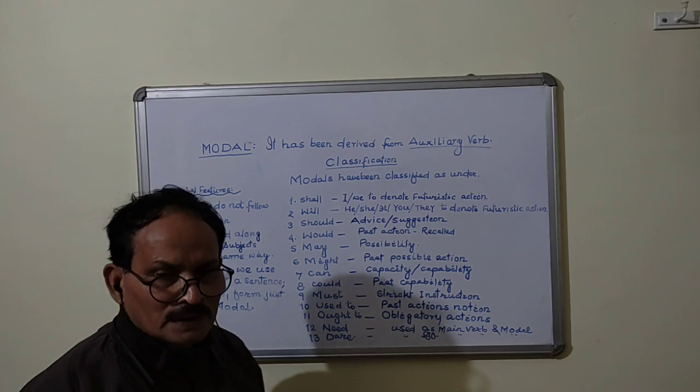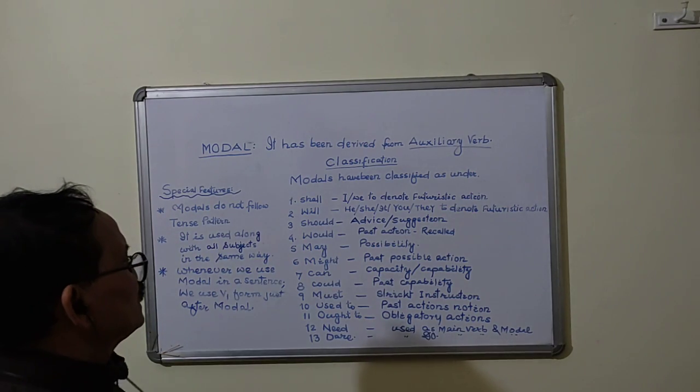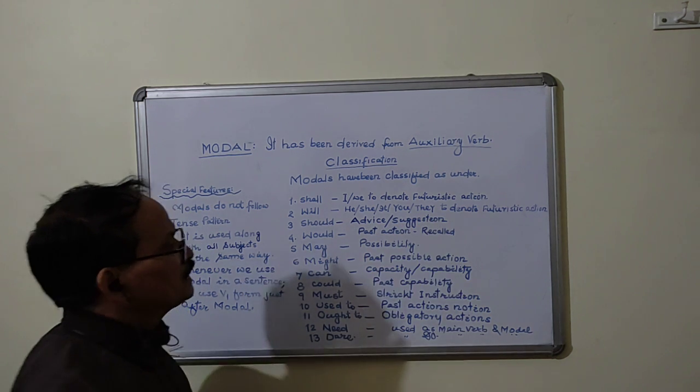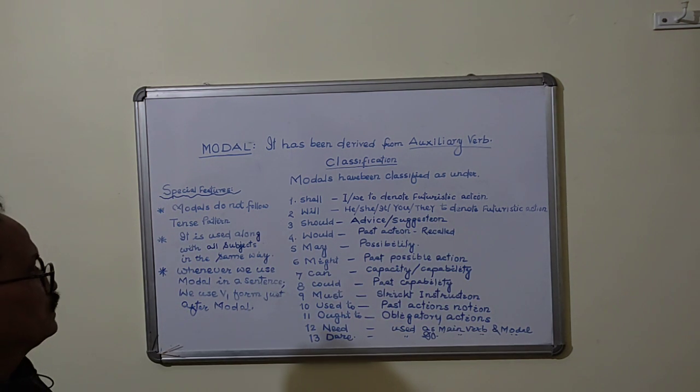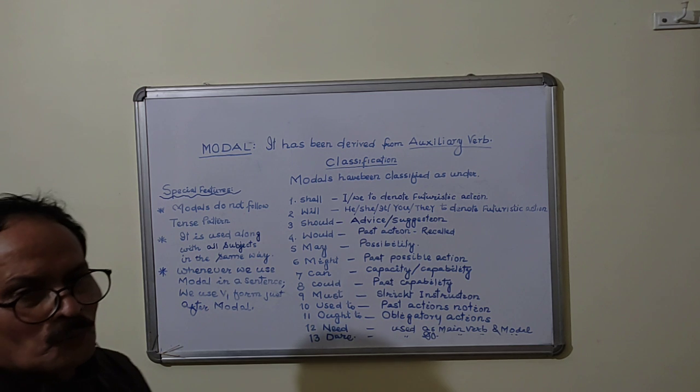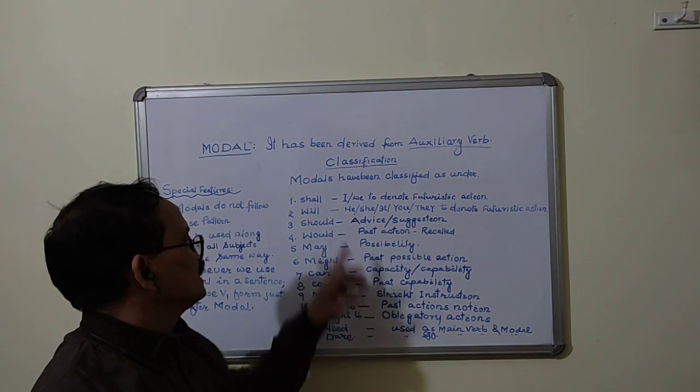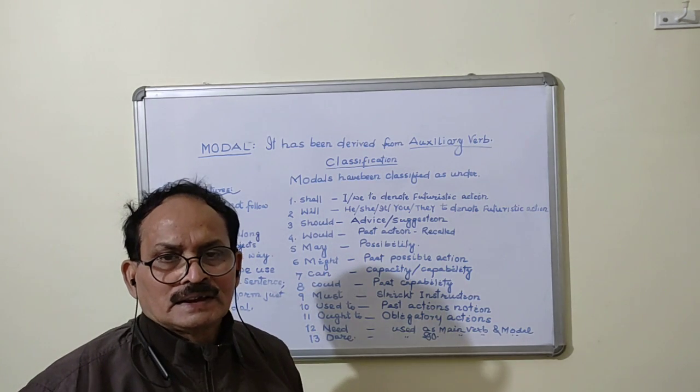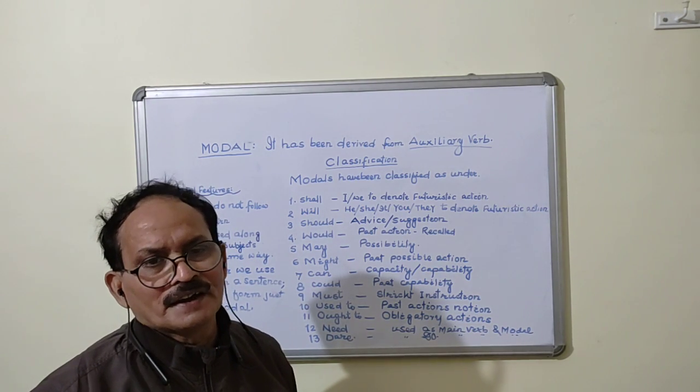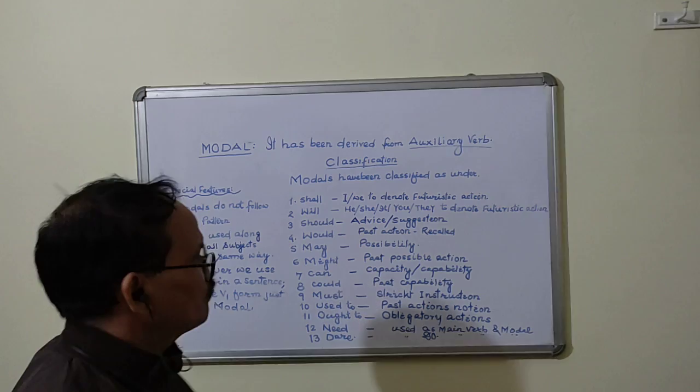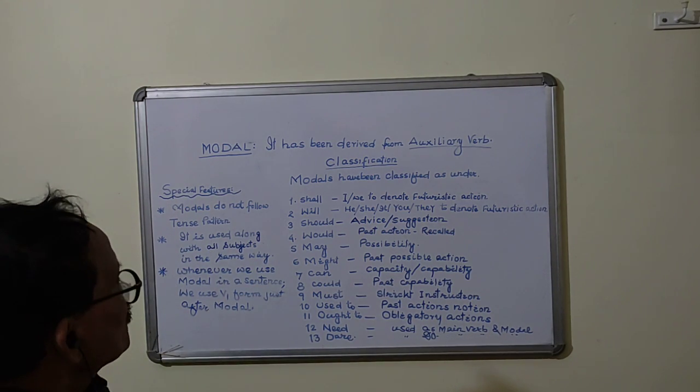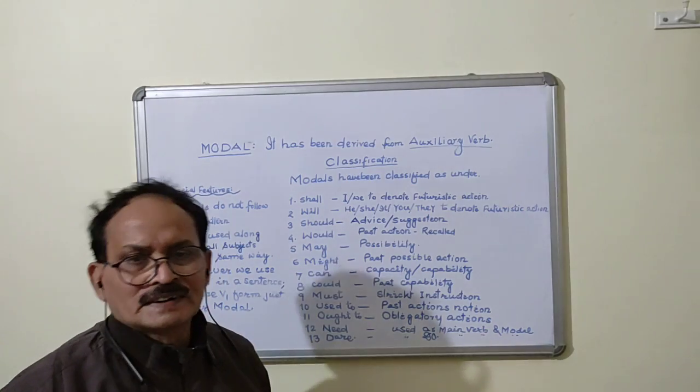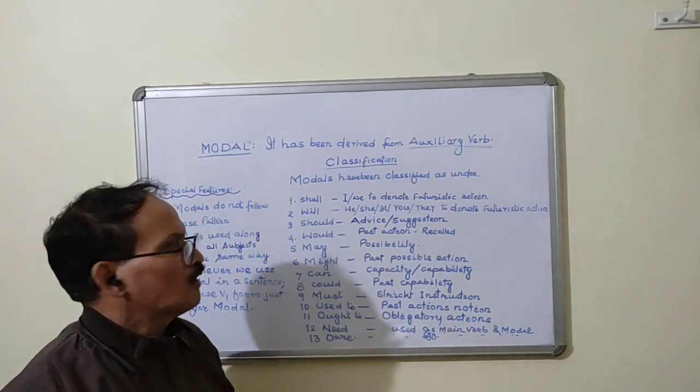Second, will is used along with he, she, it, you, and they. In this way, we use shall and will along with different subjects whether it is singular or plural.